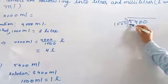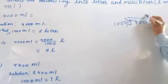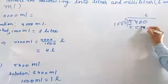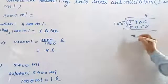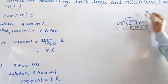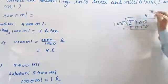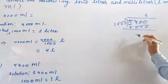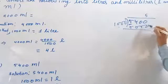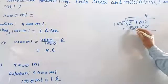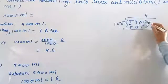Here we have 5000. 1000 times 5 is 5000. Minus karna hai — now you subtract 5000 from 5400. 0 minus 0 is 0, 0 minus 0 is 0, 4 minus 0 is 4, and here is 0. So you have 5 liters and a remainder of 400.